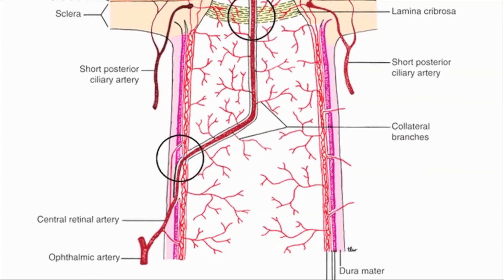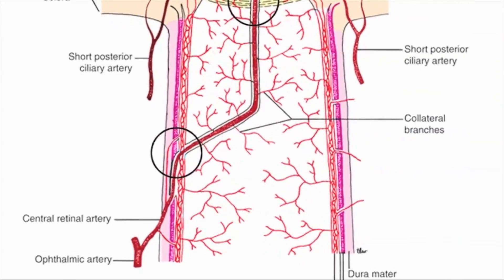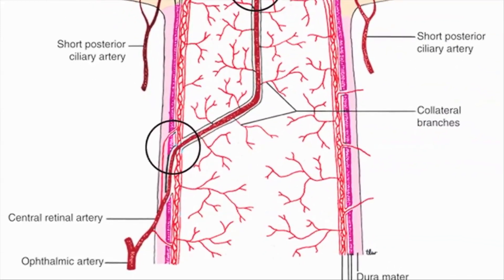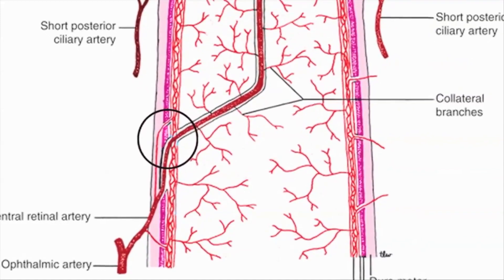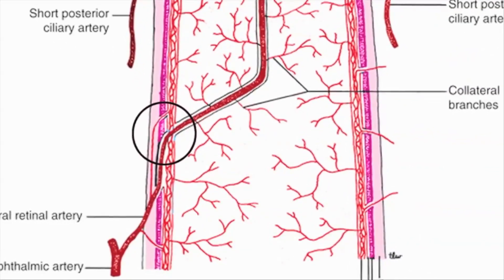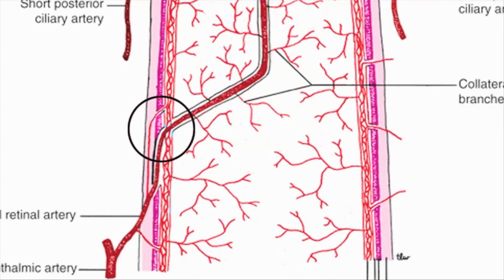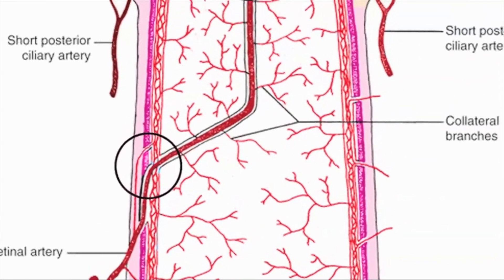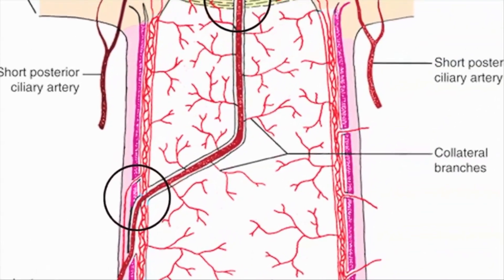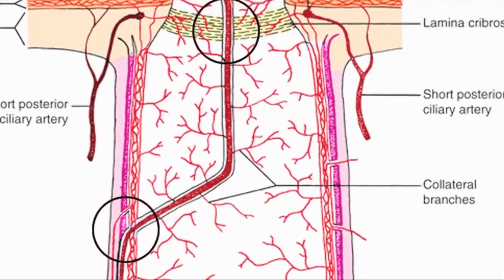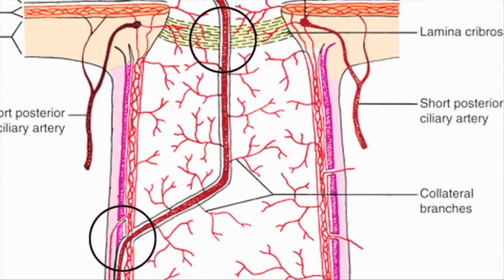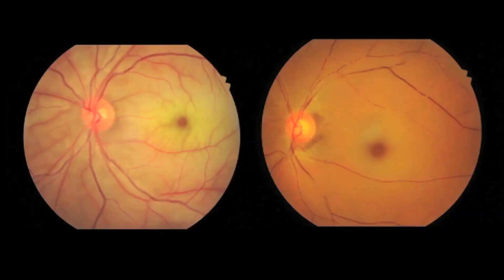We feel that if the embolus is around the area where the central retinal artery pierces the dura, this surgery is not likely to be successful. Dislodging a deeply located embolus is particularly difficult and represents a limitation of this procedure. However, if the occlusion is at the lamina, the surgery stands a good chance of success. Unfortunately, the paucity of these cases and the urgency to treat them makes a planned study impossible.